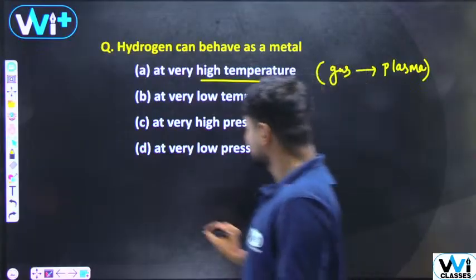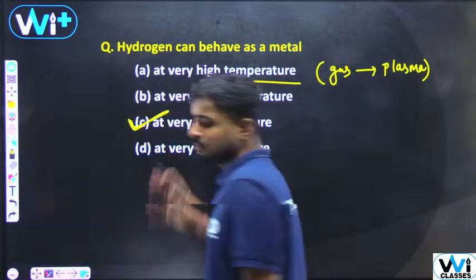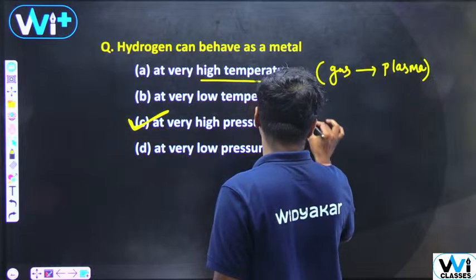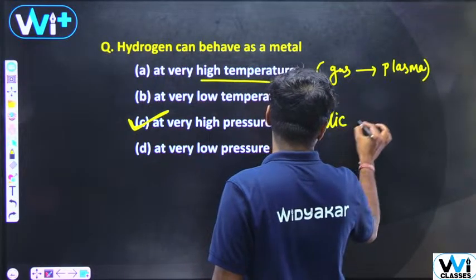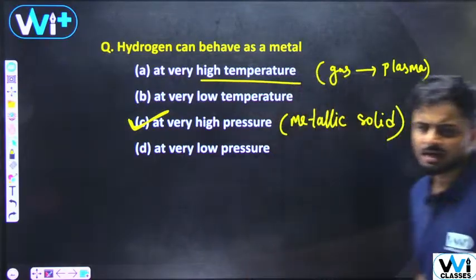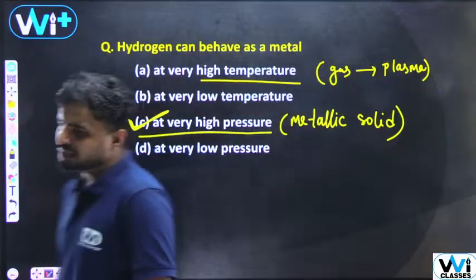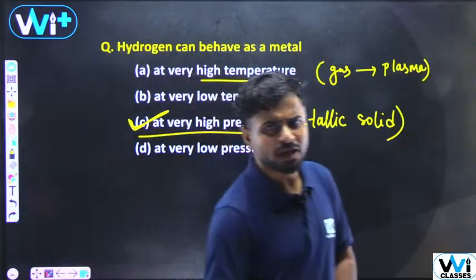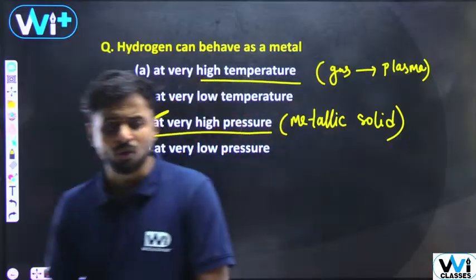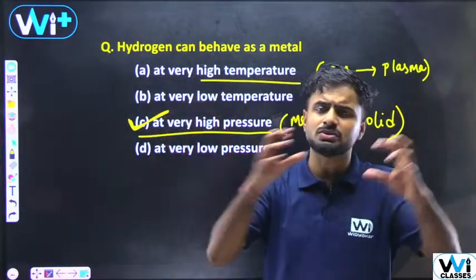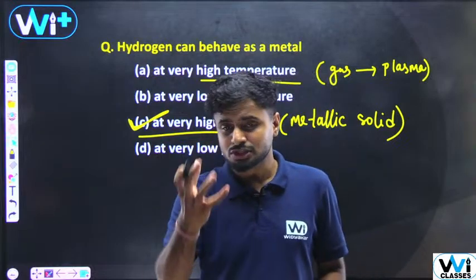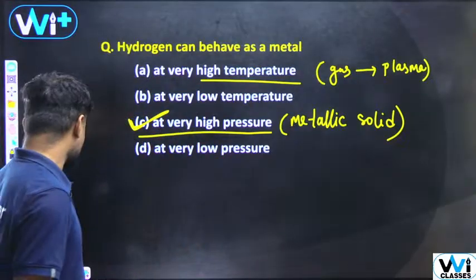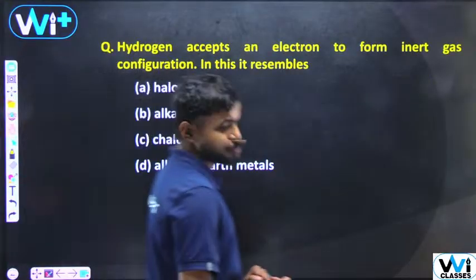High pressure is the right answer. If we increase pressure, the hydrogen will behave as a solid like a metal — a metallic solid. Large temperature gives plasma. The hydrogen gas is throughout the entire planet, that's why high pressure is the answer.